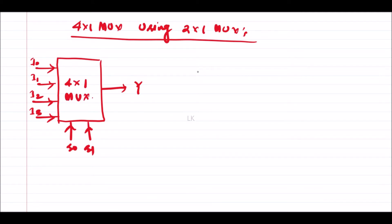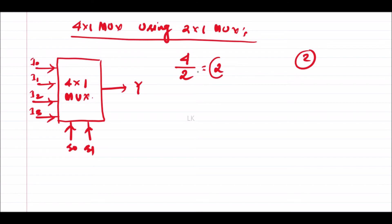Now let us identify how many 2x1 multiplexers are required to design a 4x1 multiplexer. The required design has 4 inputs and each 2x1 multiplexer has 2 inputs. Dividing 4 by 2 gives 2, so we need two 2x1 multiplexers in the first stage. Then 2 divided by 2 equals 1, so we need one 2x1 multiplexer in the second stage.